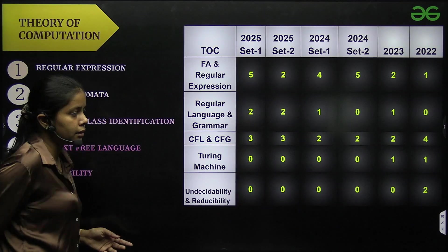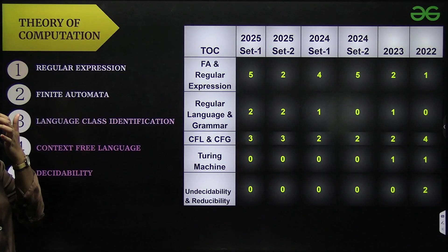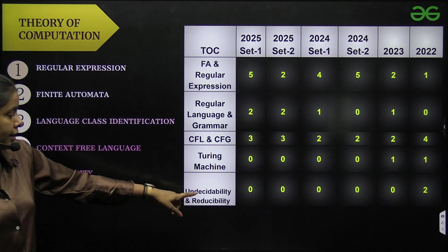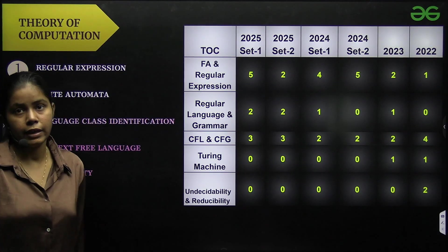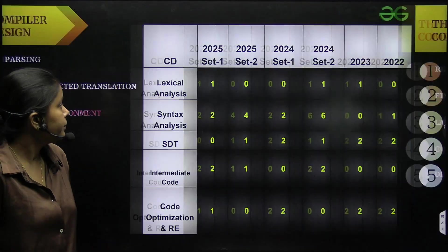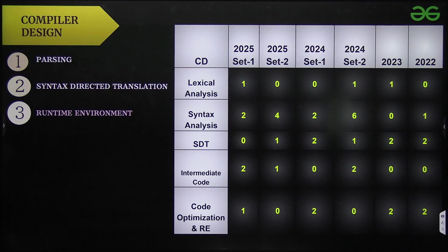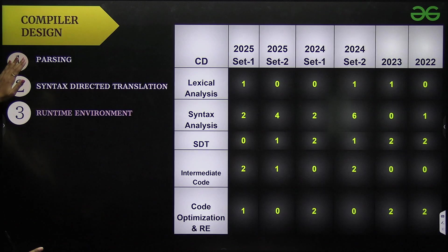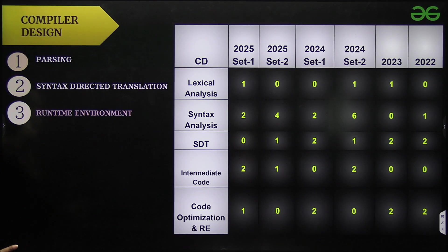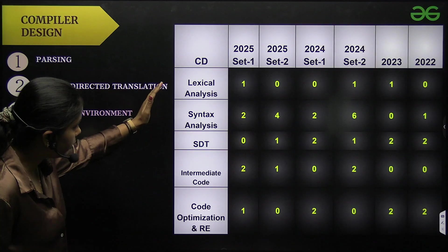Turing machine they haven't asked from 2023, and undecidability and reducibility they haven't asked from 2022. Next I have is compiler design. The important topics which we have in compiler design are: parsing, syntax directed translation, and runtime environment. These three topics are important and you can see the weightage of the important topics.